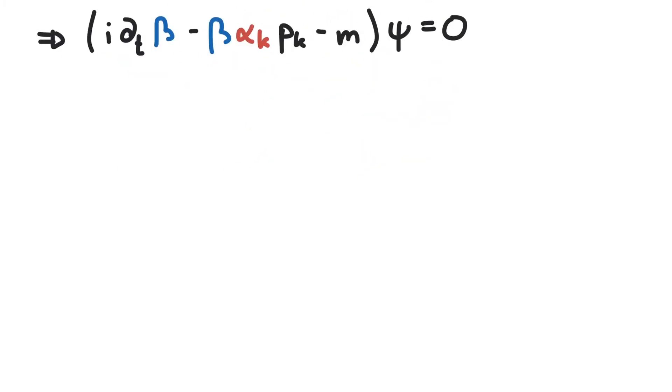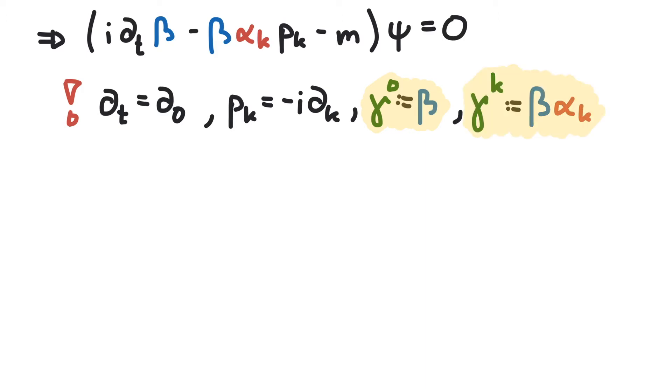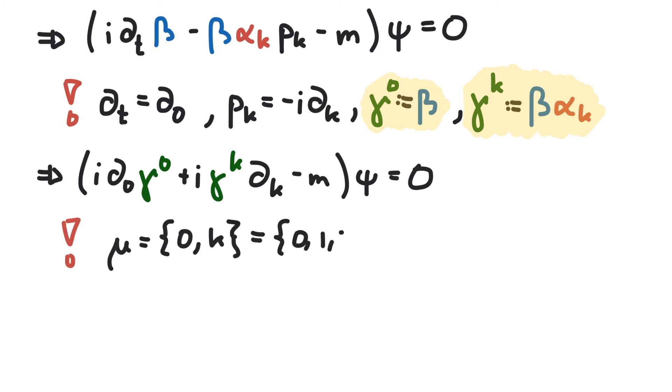Now we define a gamma zero to replace beta and some gamma k to replace beta times alpha k. As usual in special relativity, we collect a temporal index and three spatial indices into one Minkowski index, mu. So we can write the Dirac equation as i gamma mu d mu minus m times psi equals zero.